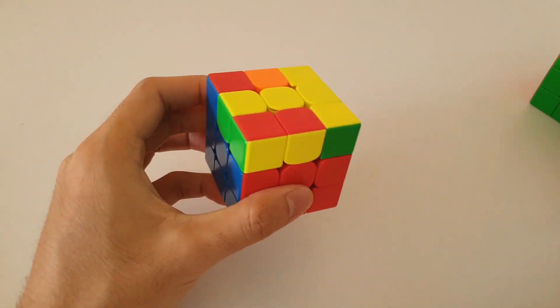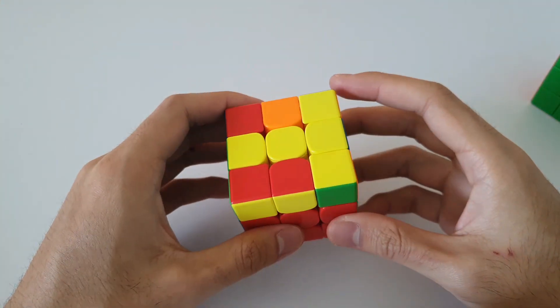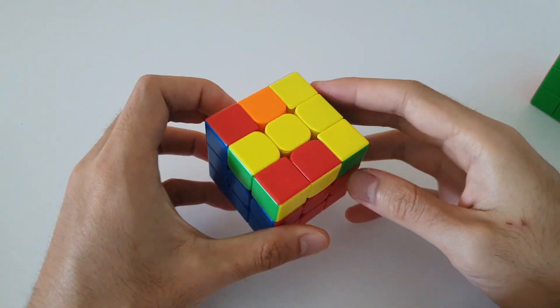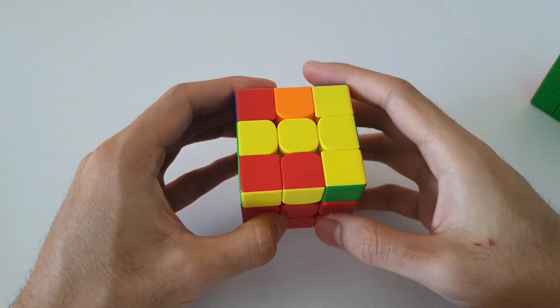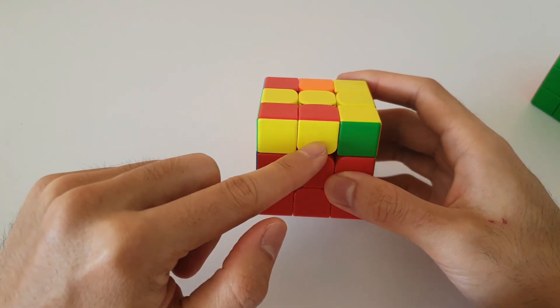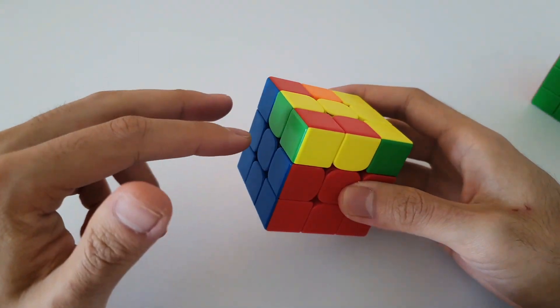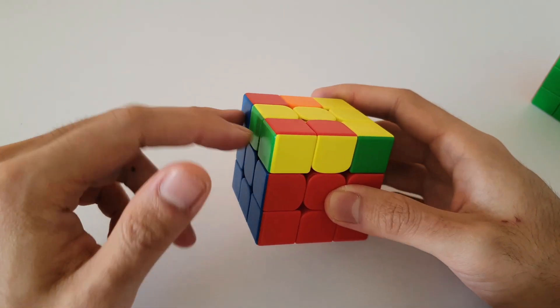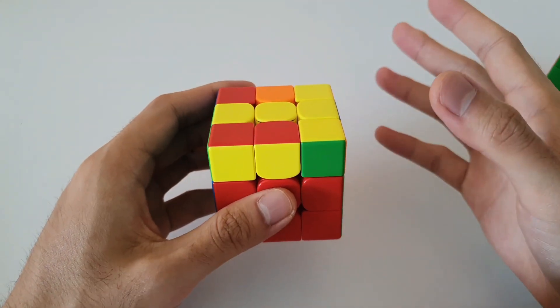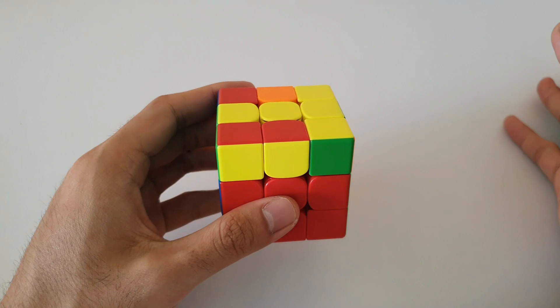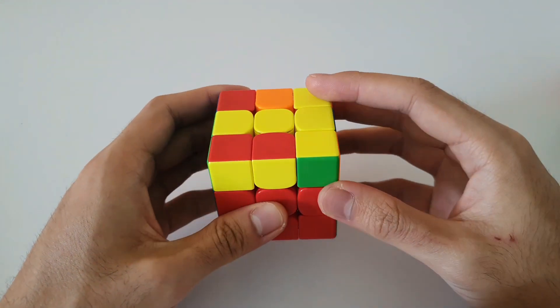Alright, now moving over to the other T case. Once again, we want to hold the T so that it's rotated over here 90 degrees like this. One of the 2x1 bars on the side facing you, the other one will of course be facing the back. Once again, this one does not have headlights so it's a different algorithm. Once again, a very simple algorithm though. So in this case, the algorithm goes like this. So you start with a sexy,